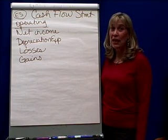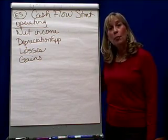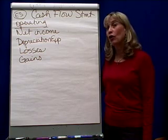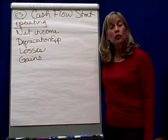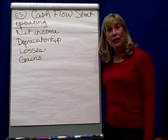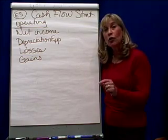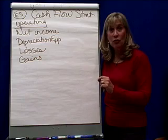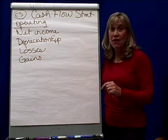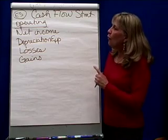Financial Accounting: Statement of Cash Flows. There are three ways to get cash or to spend cash — operating, investing, and financing. We're going to look at the operating section first, then turn to financing and investing, and then pull it all together.